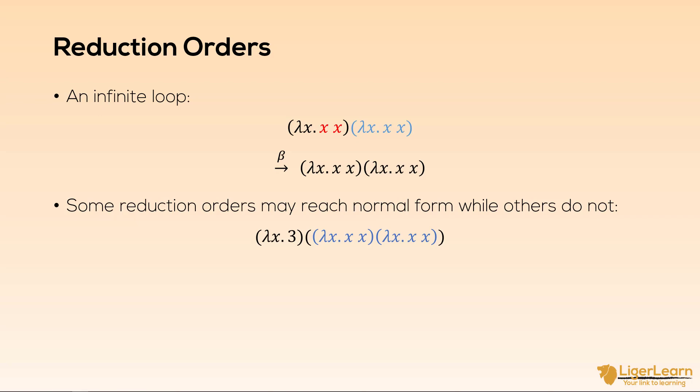However, if we choose to evaluate the expression in black first, then we will immediately terminate with a 3. That's because you can see that the lambda abstraction just disregards the argument that is applied and always returns 3, and since after that reduction, there are no more reducible expressions, we have reached normal form.